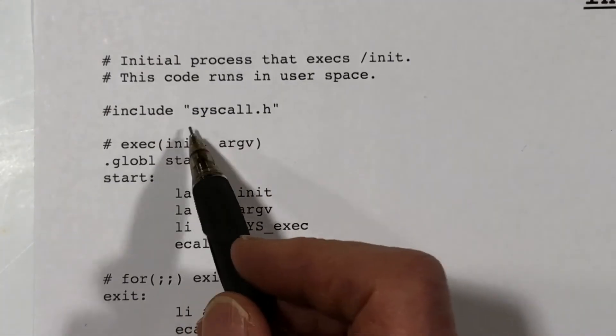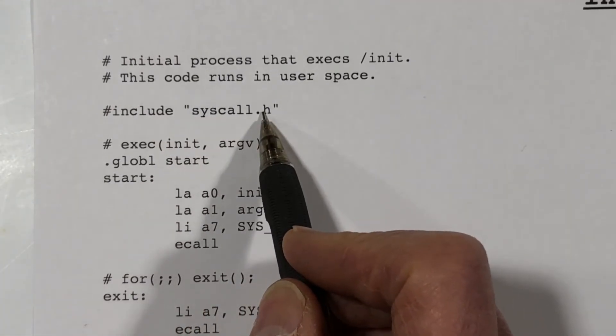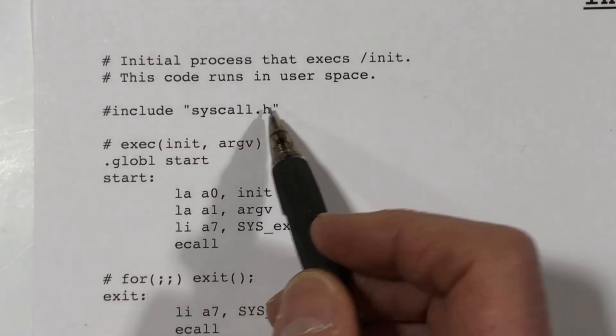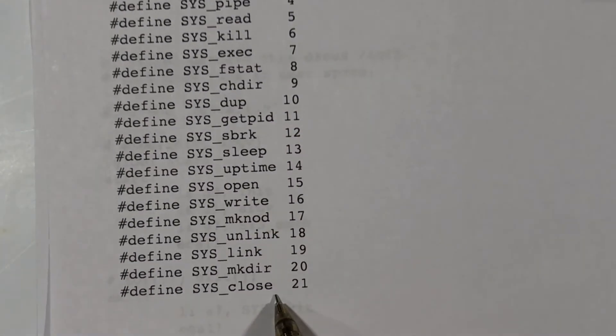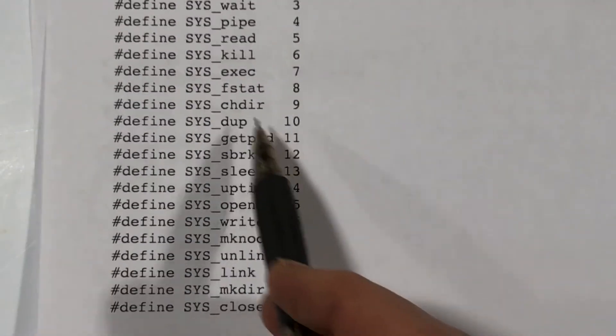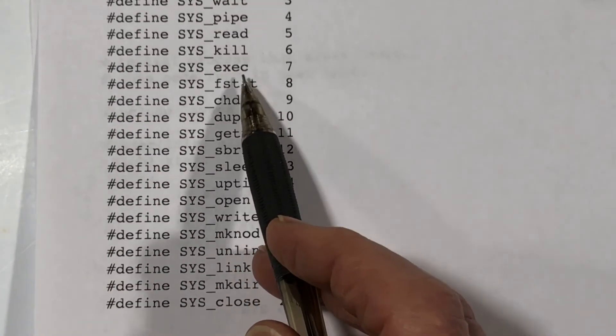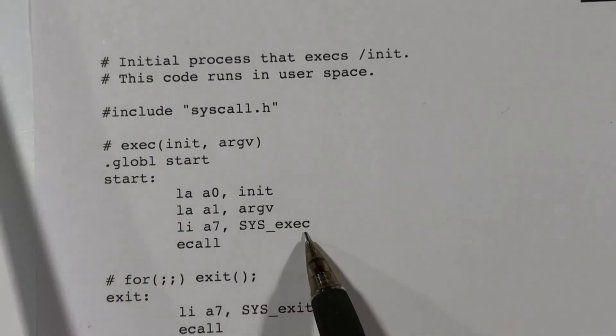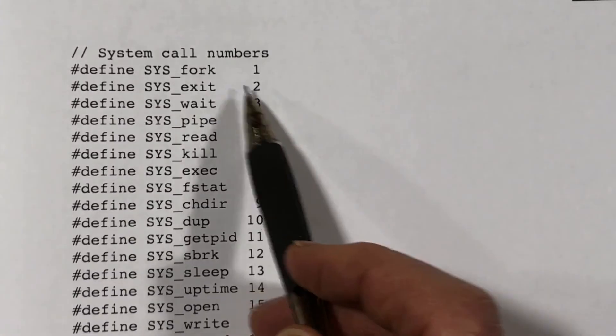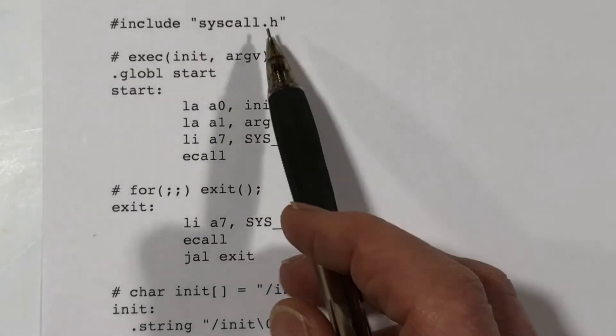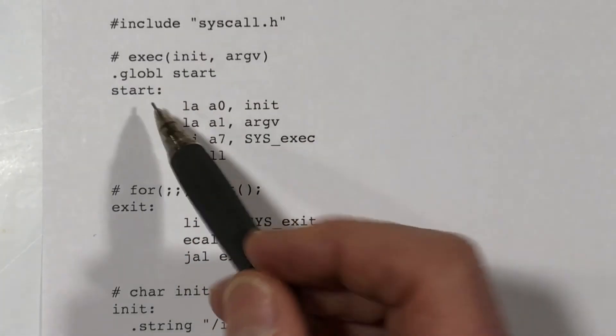So now let's look at the actual code. We're including syscall.h. That is our file that includes numbers that associates a value with each one of the sys constants. So here we're using sysexec. That's number seven. We're also using sysexit. That's number two.